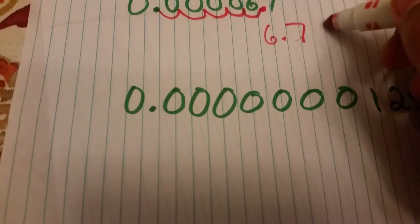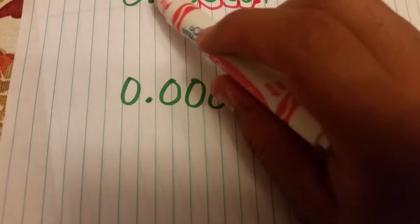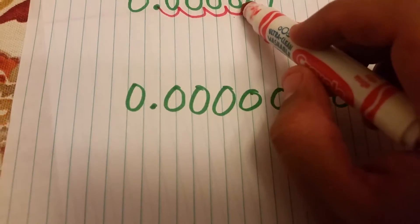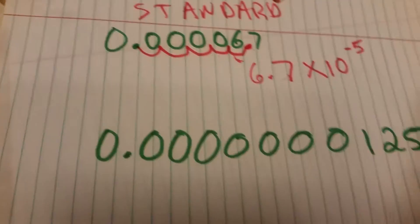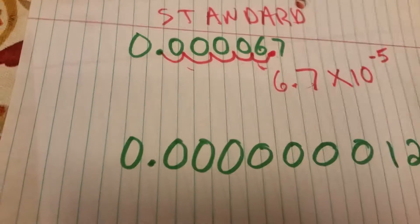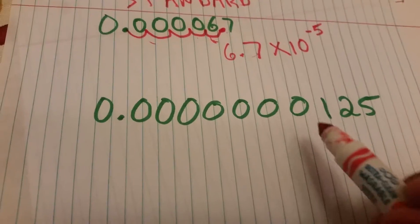So the way we even out the odds is by multiplying by 10 to the one, two, three, four, five negative five power. So depending how many times you move the decimal place, that's how many times you're going to do it. And we're going to go ahead and do the next example so you can kind of get an idea.